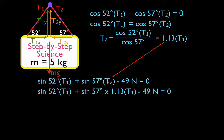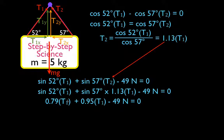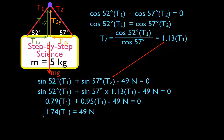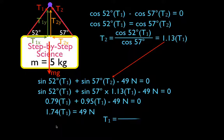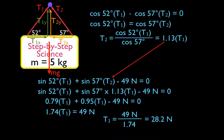Now we take this value for T2 and substitute it into the y-direction equation. Writing that out: sine of 52 · T1 plus sine of 57 · (1.13 · T1) minus 49 equals zero. The sine of 52 is 0.79, and the sine of 57 times 1.13 is 0.95. Adding those together gives 1.74 · T1 equals 49 newtons, so T1 equals 49 divided by 1.74, which is 28.2 newtons. The tension in the first wire is 28.2 newtons.